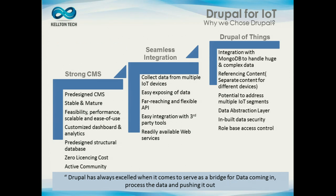Why are we using Drupal for IoT? It's a strong CMS that allows all the flexibility we need in configuring for different use cases. It's a stable, mature, scalable system with a very active community. It provides seamless integration — we're able to easily integrate and collect data from multiple IoT devices, expose data through flexible APIs, and easily integrate with third-party tools. As the platform grows and gets used in malls or enterprises, we'll integrate with MongoDB to handle the big data and complex data challenges that will arise.